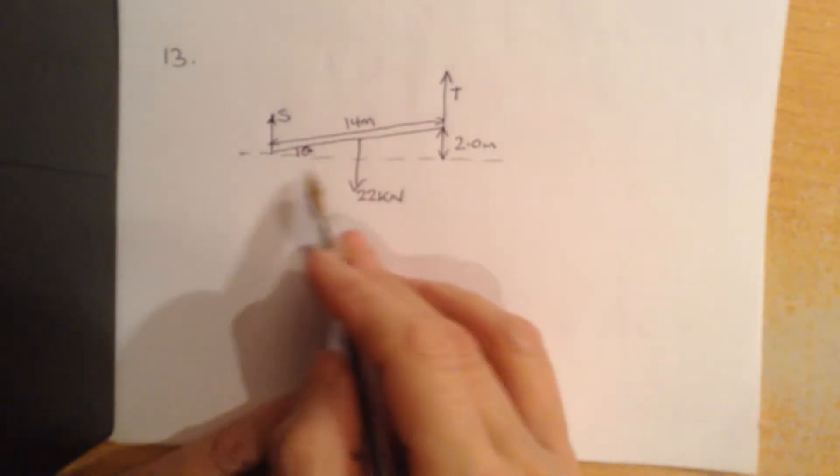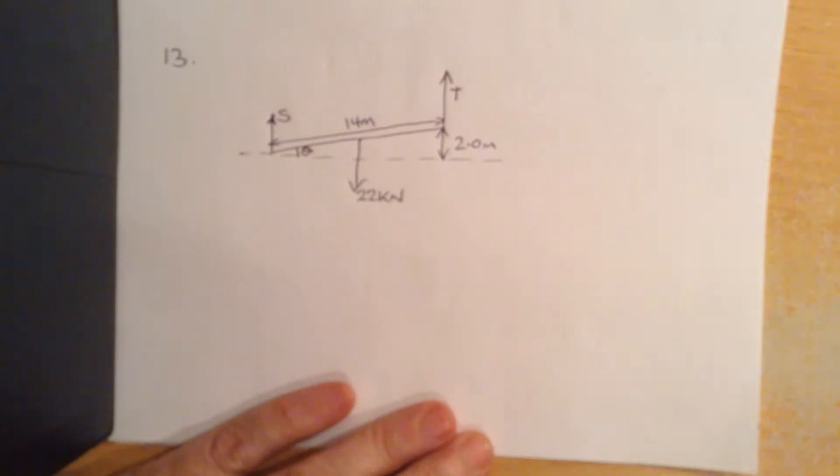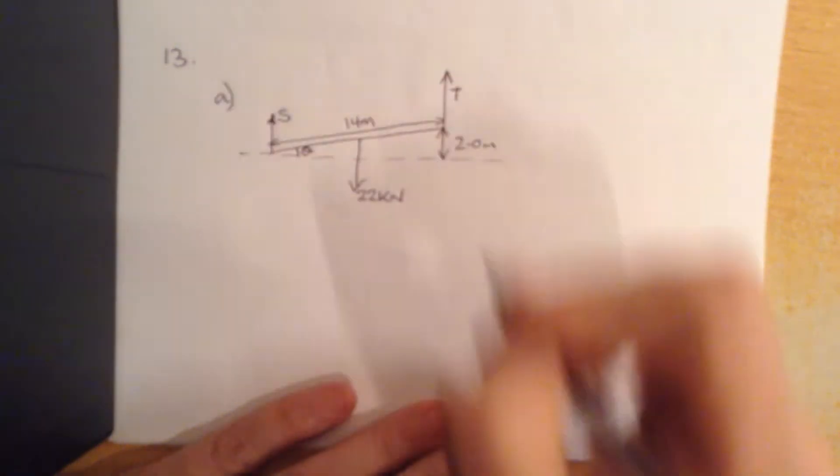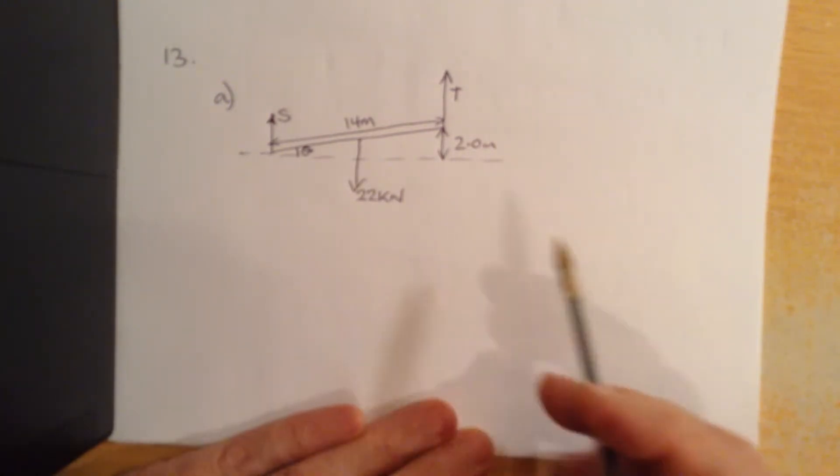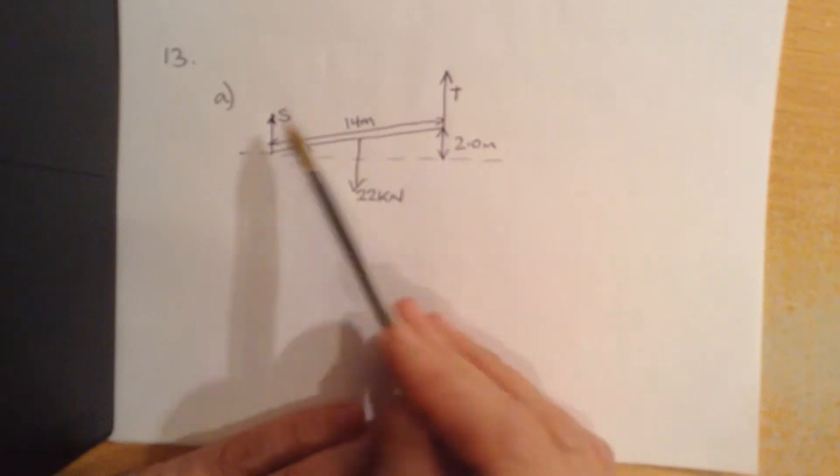So the first thing I'd do is, well the actual question says sketch a free body diagram, which we have just done. And then part B, calculate the tension in the cable at this position and the force of the girder. So we need to work out T and S.